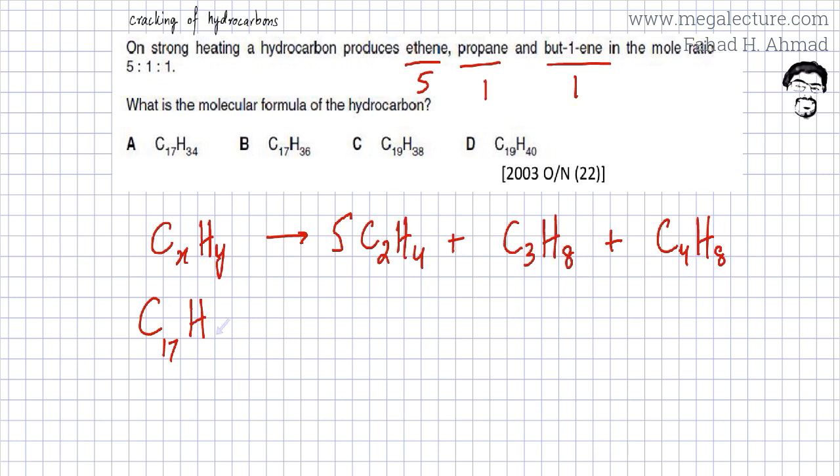So hydrogens would be 36. So the correct answer is C17H36 which is going to be option B.